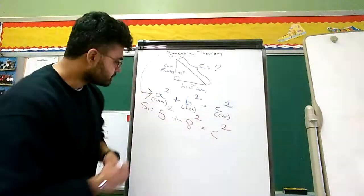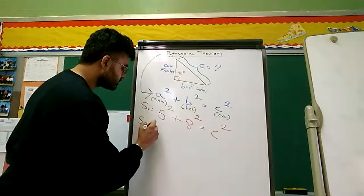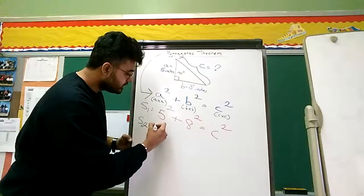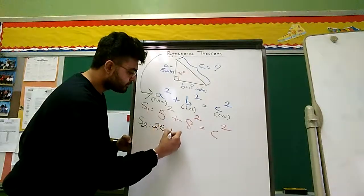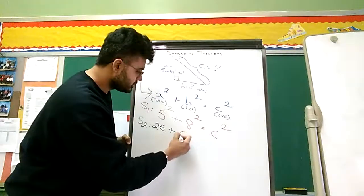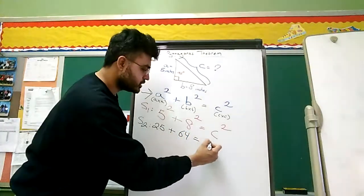Step number two: solve. 5 squared, 5 times 5, is 25. 8 squared, 8 times 8, is 64. Equals C squared.